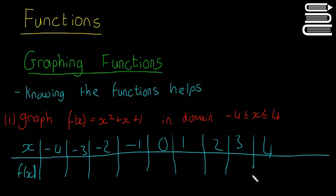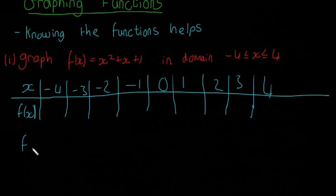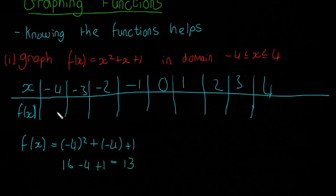And then it's just about sticking each number into your function as follows. So I'm only going to do the first one just to show you. You're going to say f(x) = (-4)² + (-4) + 1. That's 16 - 4 + 1, and that's equal to 13.